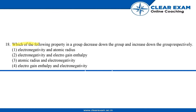Which of the following properties decrease down the group and increase down the group respectively? The options are: electronegativity and atomic radius, electronegativity and electron gain enthalpy, atomic radius and electron gain enthalpy.